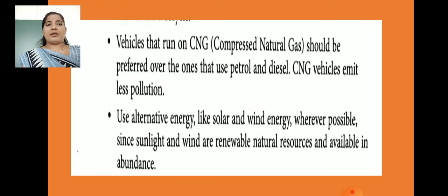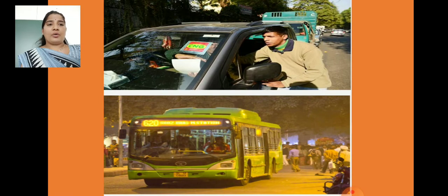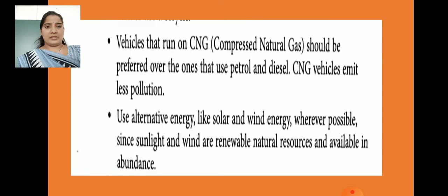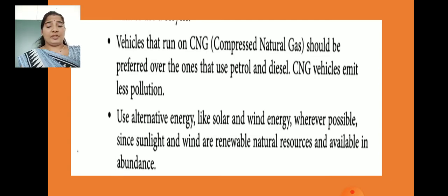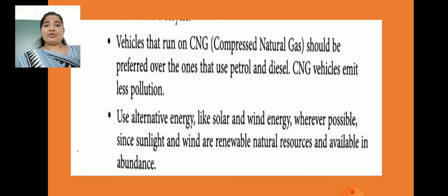This is CNG — Compressed Natural Gas. We have to use that, so less pollution will be there. Use alternative energy like solar and wind energy wherever possible, since sunlight and wind are renewable natural resources and are available in abundance. We have to use solar and wind energy because renewable natural resources are available in abundance.